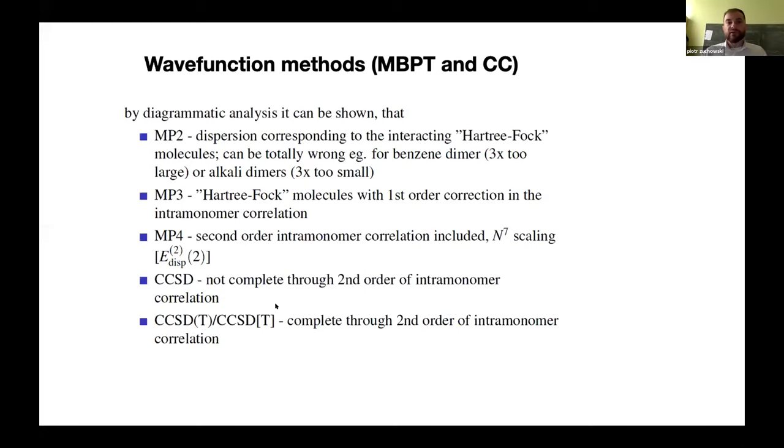So, the proper dispersion appears only at MP4 level, but it's already quite expensive. Coupled cluster single-double theory is not complete to the second order of intramonomer correlation, which means that dispersion is not so accurate in this model. And the gold standard quantum chemistry methods, they contain the dispersion energy which is accurate through the second order of intramonomer correlation. And this is actually the method which you should use in order to reproduce decent dispersion.